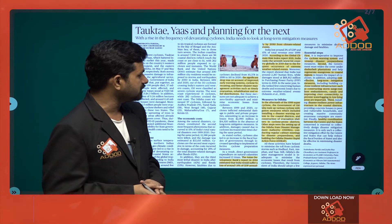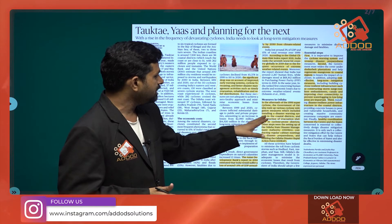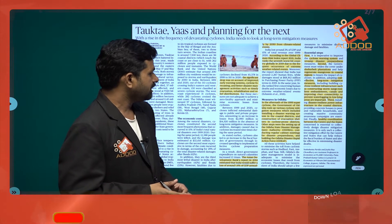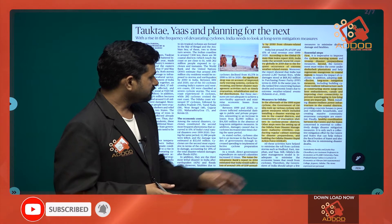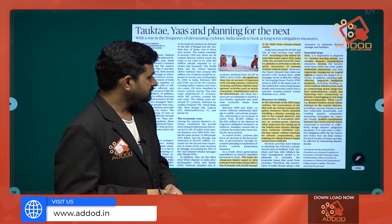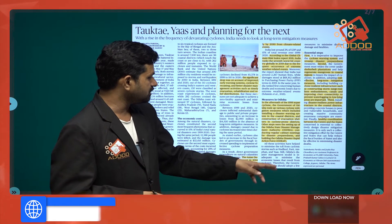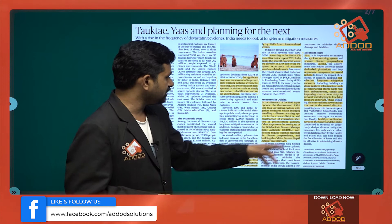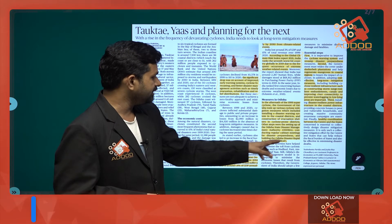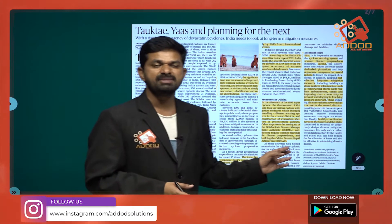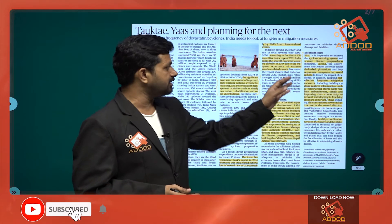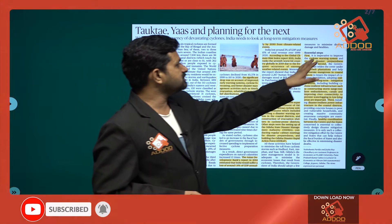Odisha's post-1999 cyclone mitigation measures included installing a disaster warning system in coastal districts and constructing evacuation shelters in cyclone-prone districts. Other steps included setting up the Odisha Disaster Management Authority, conducting regular cabinet meetings for disaster preparedness, and building the Odisha Disaster Rapid Action Force. These are the measures Odisha has taken because of its history of severe cyclone impact.